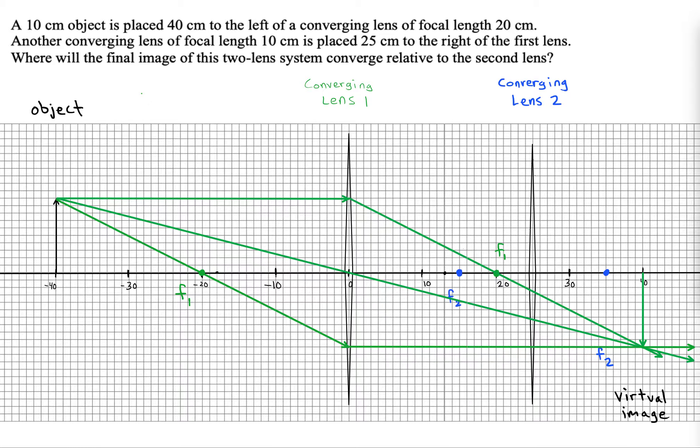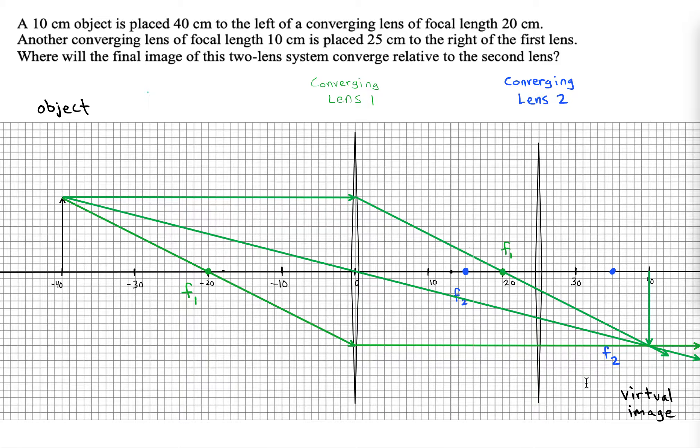But another thing that it does is that it comes in parallel to lens 2, and that is a special situation. Because when a ray comes in parallel to a lens, then it should bend through a special point, which would be the focal point of that lens. So I'm going to draw a ray now that goes through that second focal point.